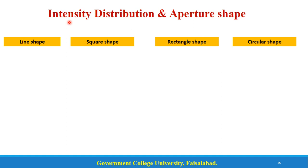A simple everyday example of reflection grating is a compact disc. The surface of a CD has closely spaced lines. When you shine light on the surface, you can see different colors — that is an example of reflection grating.